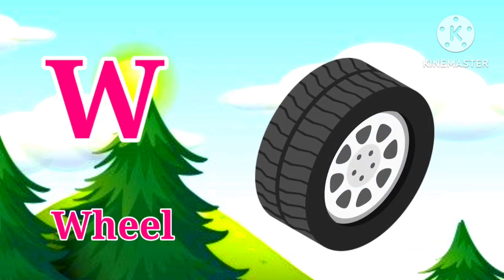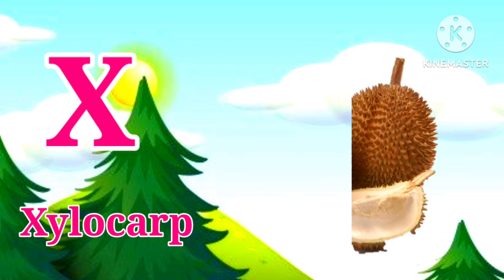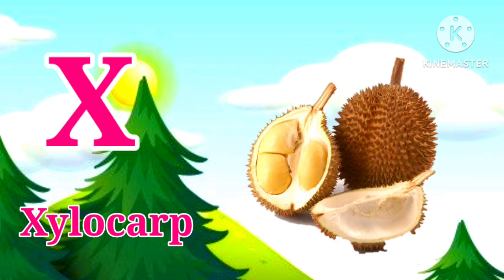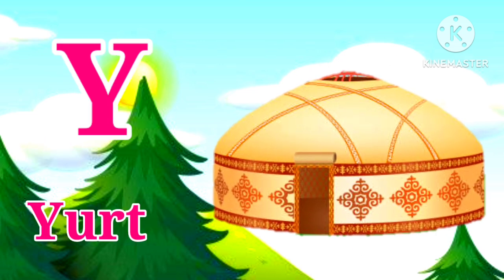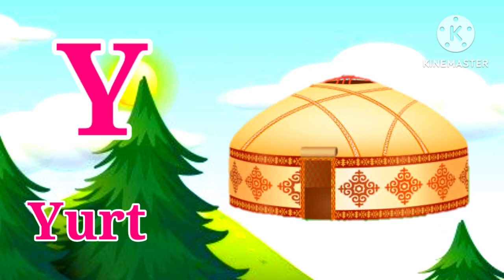W for Wheel. Wheel means Chakka. X for Zailocard. Zailocard means Zailocard. Y for Yert. Yert means Yert.